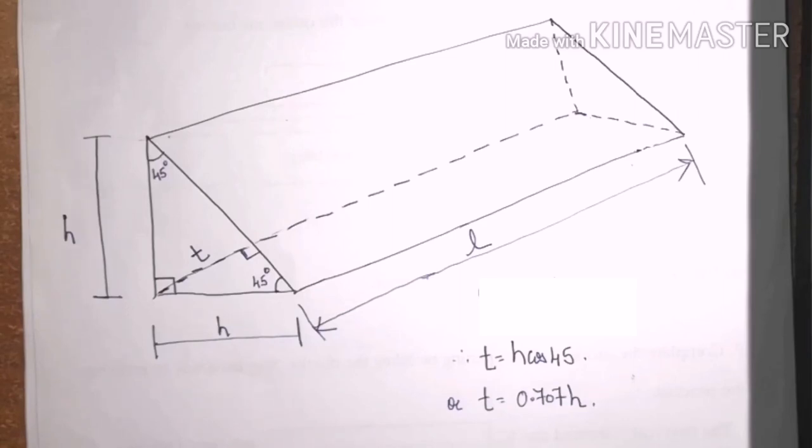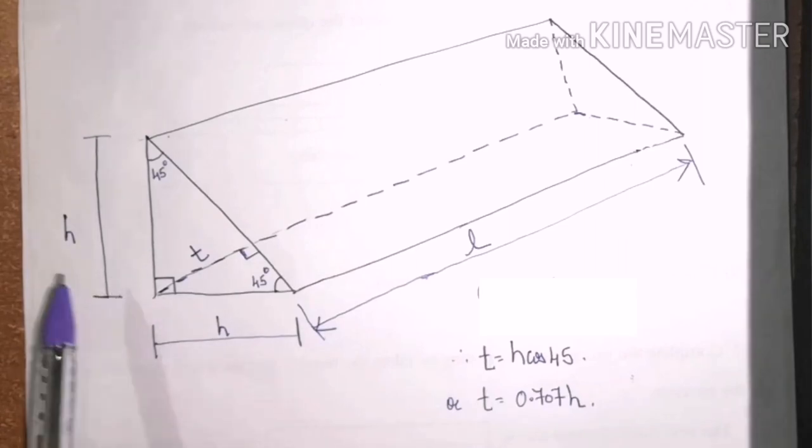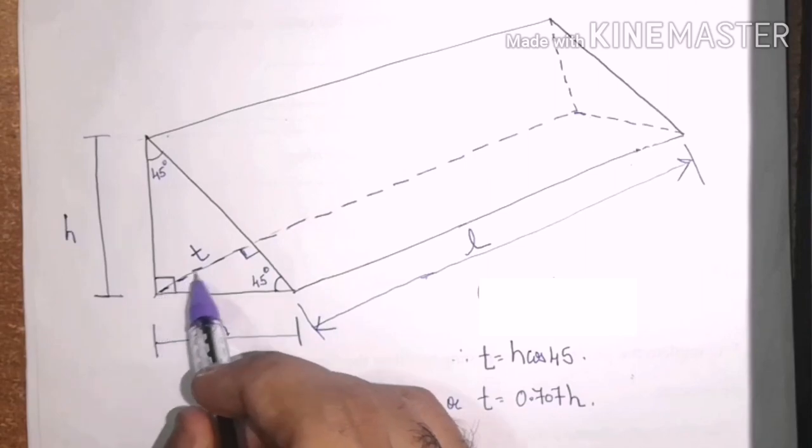Now, to understand at what point or from which point the actual failure take place, let us have a look on this diagram given. From the basics, we know that a component fails from the minimum cross section area. For an isosceles right angle triangle of height h and base h, the minimum cross section area will be at this point.